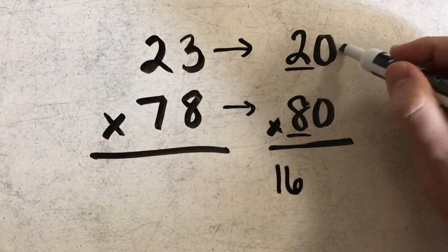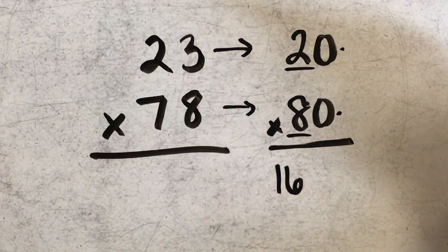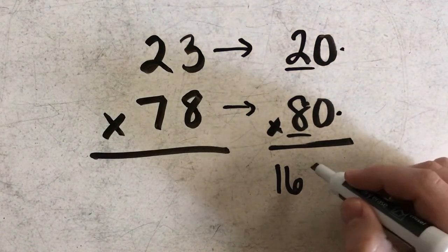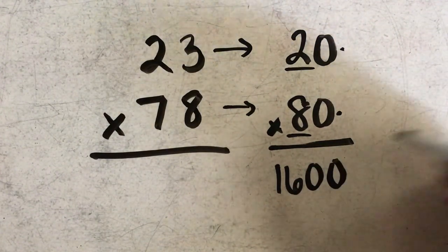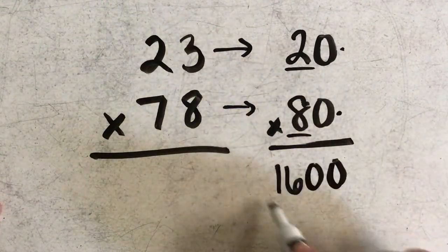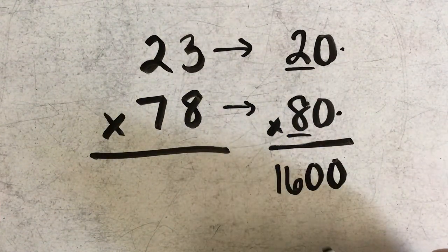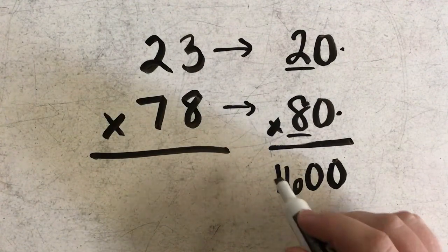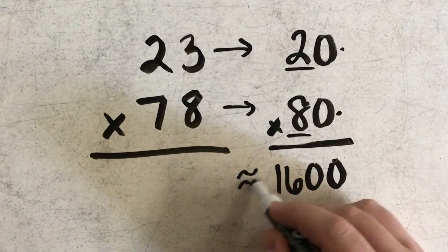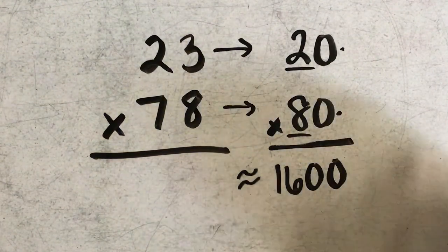But then I need to go back and add the zeros that I have here. So I have 1 zero in 20 and 1 zero in 80. So I need to add a total of 2 zeros to my answer. So 20 times 80 would be 1,600. So I would say that the answer to 23 times 78 would be about 1,600.